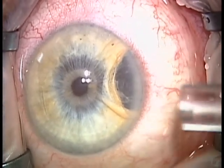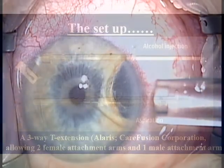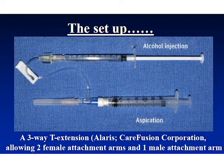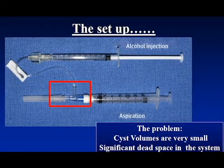One of the difficulties with this procedure is the very small volumes involved. This is a photograph of the setup reported by Carol Shields, which uses a three-way T-extension with two female attachment arms and one male attachment, allowing you to connect two syringes to a single needle. A problem arises, however, with the amount of dead space in the T-connector on the aspiration syringe.